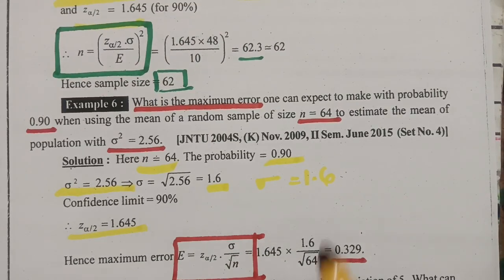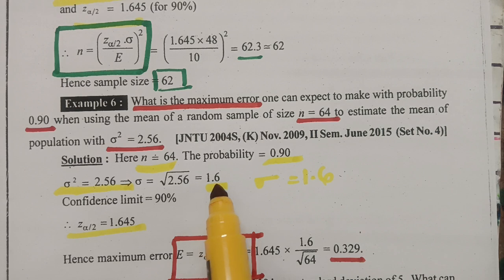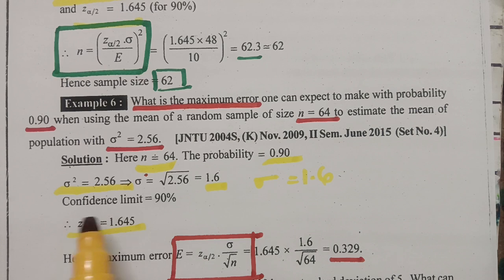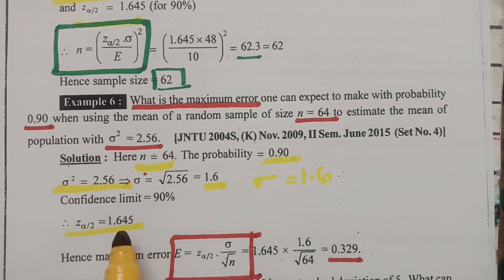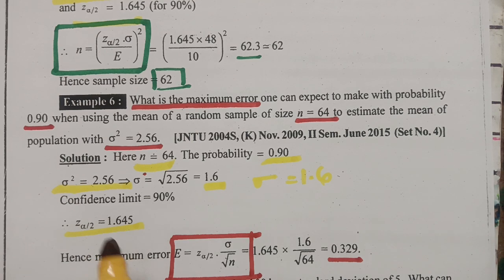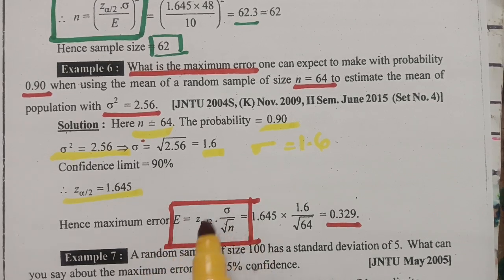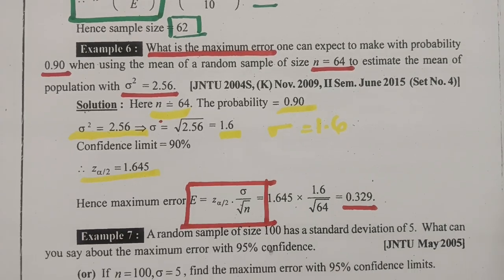From the question itself, we select all the numerals and write whatever is given. So sigma is given as 1.6, the probability is 0.90, and N is equal to 64. For the 90% confidence limit, Z alpha by 2 from the table is 1.645. Then for maximum error, the formula is E equal to Z alpha by 2 · sigma / root n. Substituting all the values, this is the maximum error.